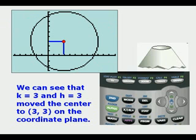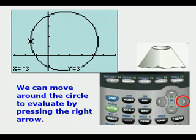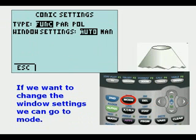We can evaluate points on the circle by pressing Trace. We can move around the circle to evaluate by pressing the right arrow. And from there, we can continue either way around the circle with either right or left arrow.